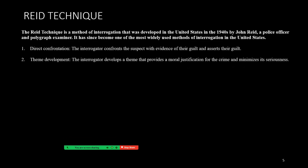Theme development: the interrogator develops a theme that provides a moral justification for the crime and minimizes its seriousness. This is a manipulative strategy in which the interrogator is essentially saying, 'I can really understand why you would do what you did,' assuming the suspect's guilt and trying to convince the suspect they're on their side if they just come forth with a confession. The whole point of the Reid technique is to obtain a confession.